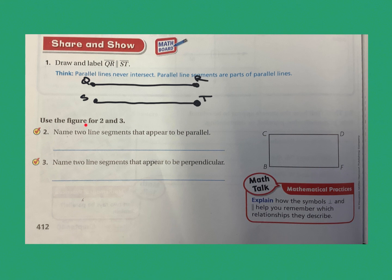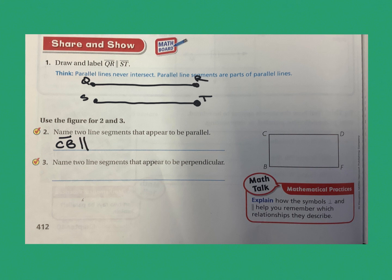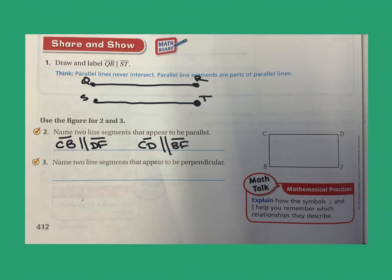Using this figure, name two line segments that appear to be parallel. Line segment CB is parallel to line segment DF. There's another set as well: line segment CD is parallel to line segment BF. So the parallel pairs are CB and DF, and CD and BF.